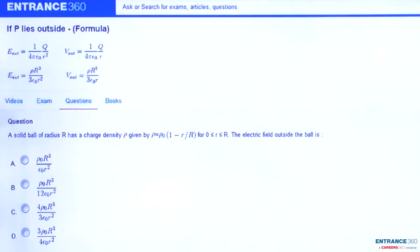Question says that a solid ball of radius R has a charge density rho equal to rho_0 times (1 minus r by R), where the value of small r lies between 0 and R, where capital R is radius of the sphere. We need to find the electric field outside the ball.